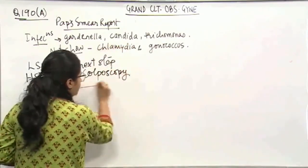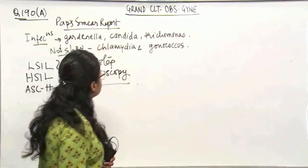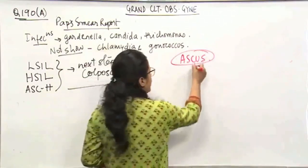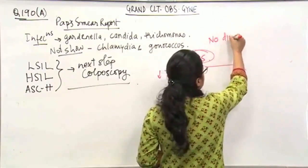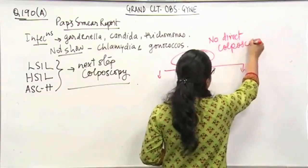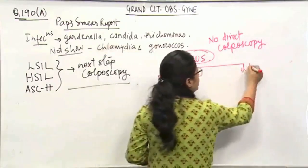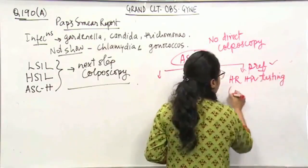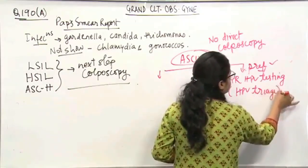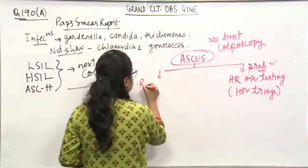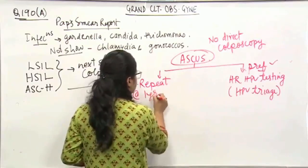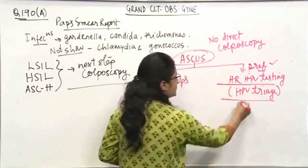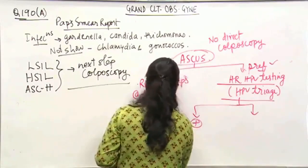But what I want you to remember here this has been asked in the PGI and the recent guidelines have also changed. What you have to do if there is ASCUS. If there is ASCUS, there is no direct colposcopy anymore. You have to either do the preferred action is basically a high risk HPV testing. This is also called as HPV triage. This one has to do or one can just repeat after 1 year, repeat PAPS after 1 year if this is not possible, but this is the preferred action is HPV testing. And if it is positive, then go for colposcopy.